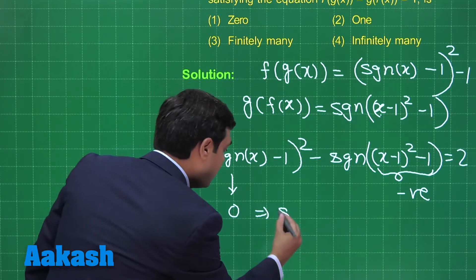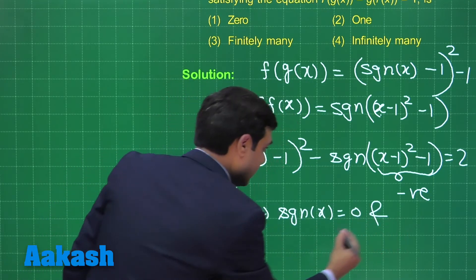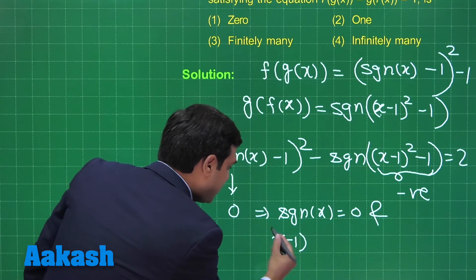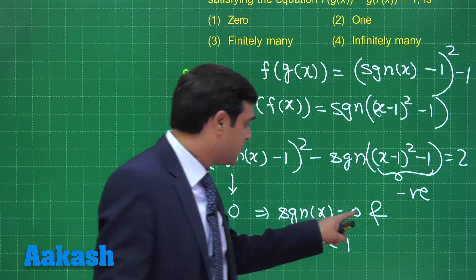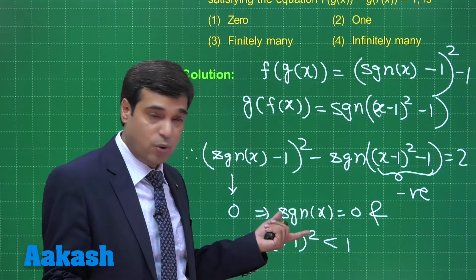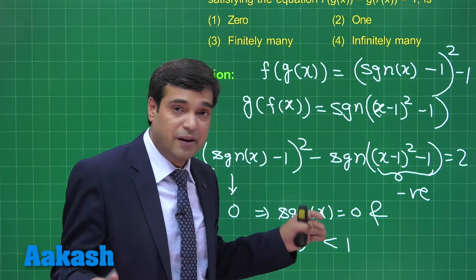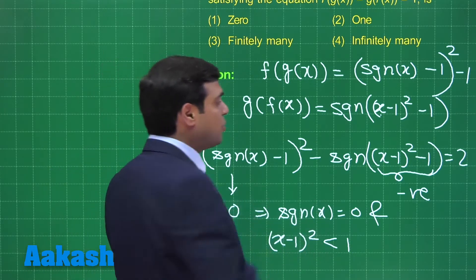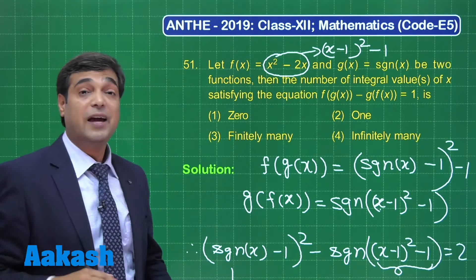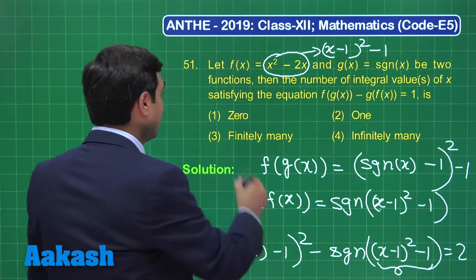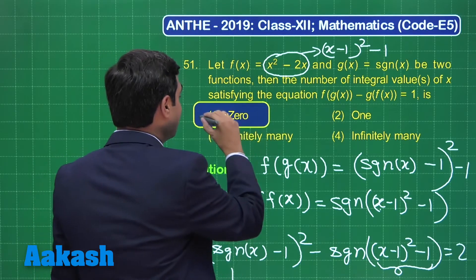So clearly we have signum x is zero, and (x - 1)² is less than one. Signum x is zero when x is zero. When you put x equals zero, one is not less than one. What does it mean? There is no such value of x which can satisfy the requirement. So the number of solutions we simply obtain: zero. So the correct answer for this question is option number one.